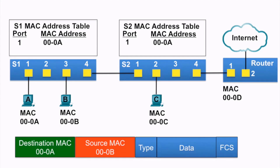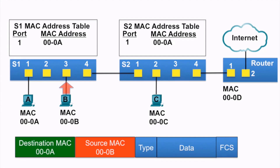Now let's have PCB send a frame back to PCA. The source MAC address of the frame is 000B and the destination MAC address is 000A. PCB sends it to switch S1. S1 notices that the source MAC address is not in its MAC address table so it adds the MAC address and the incoming port number. Next, S1 examines the destination MAC address and notices that MAC address is already in its MAC address table, so it sends it out just port 1. PCA receives the ethernet frame, examines the destination MAC address against its own MAC address, notices it is a match, and receives the rest of the frame.